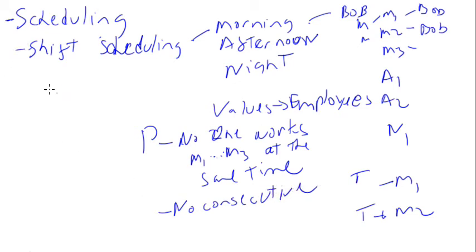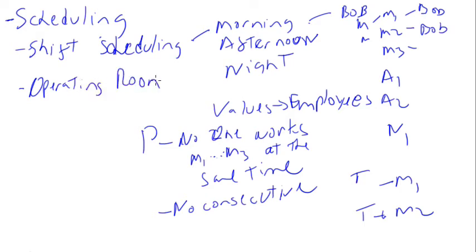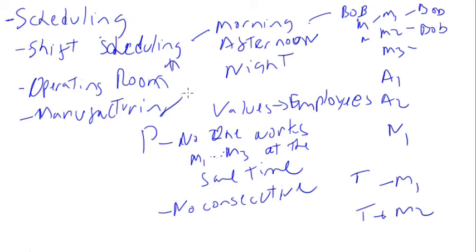There are many other types of scheduling that are very similar. In a hospital, operating room scheduling works the same way — you schedule rooms and assign doctors to operate at a given time. Manufacturing systems have these kinds of scheduling problems as well. These are all instances of constraint satisfaction problems that can be solved in a distributed manner.